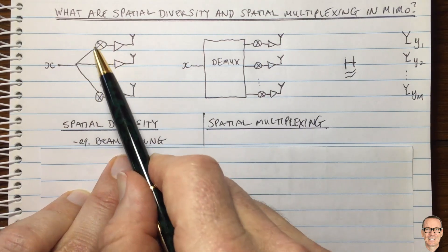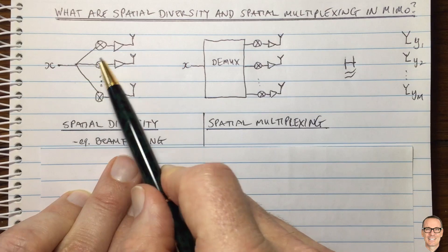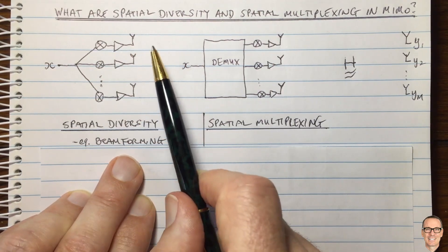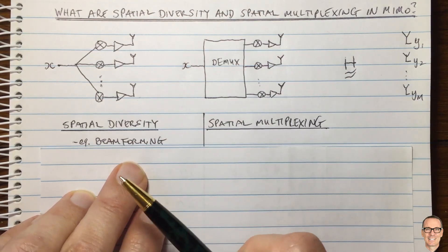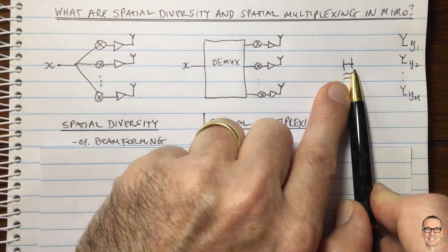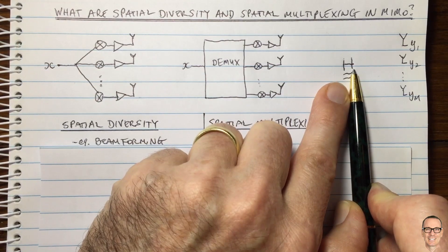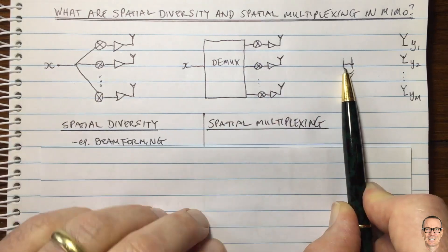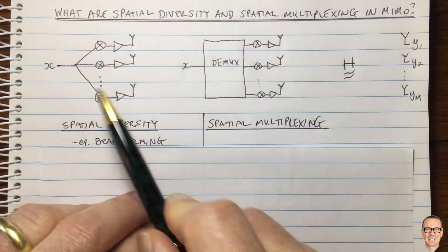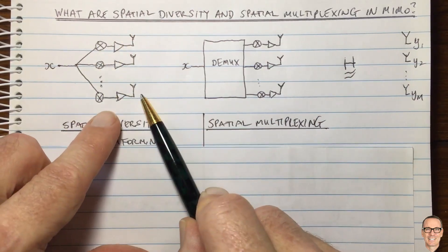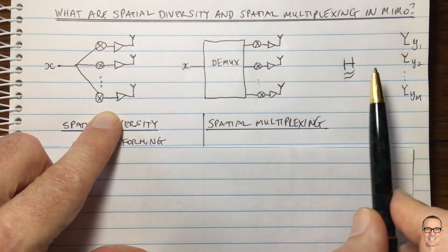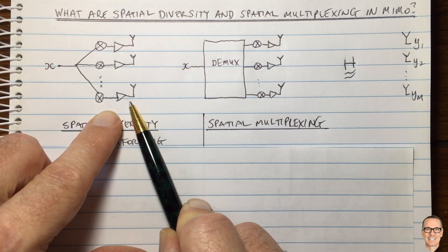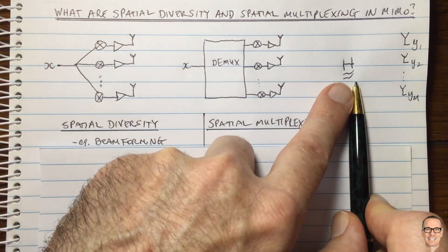But essentially what you're doing is changing the phases so that the signals from these different antennas all add up in phase in a particular direction. And so if your channel is dominated, let's say, by a direct line of sight path, for example, and that one path dominates, one direction of transmission dominates, then you would be wanting to use beamforming intuitively. We're going to look into why in a little bit with the matrix, but intuitively you want to do beamforming in that scenario when there's a dominant path.